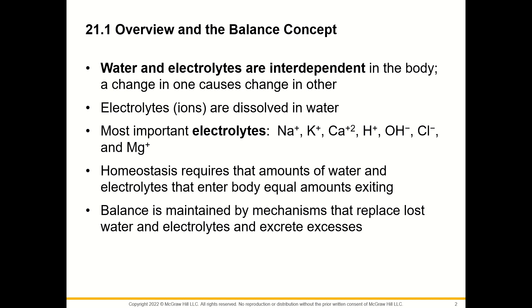Electrolytes, called ions, are dissolved in water. The most important electrolytes are sodium, potassium, calcium, hydrogen, hydroxide, chloride, and magnesium. Homeostasis requires that amounts of water and electrolytes that enter the body equal the amounts exiting. Balance is maintained by mechanisms that replace lost water and electrolytes and excrete excesses.